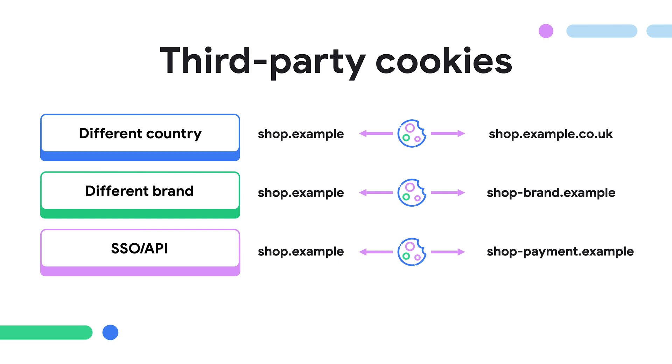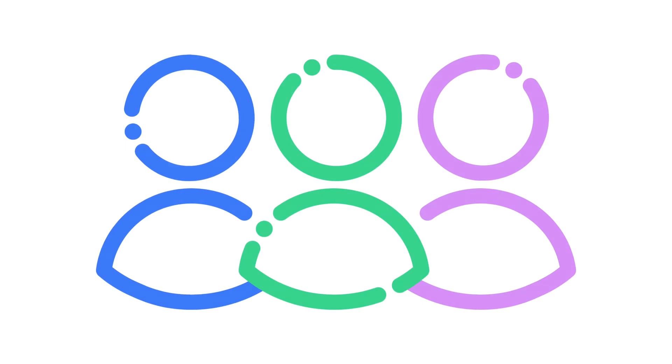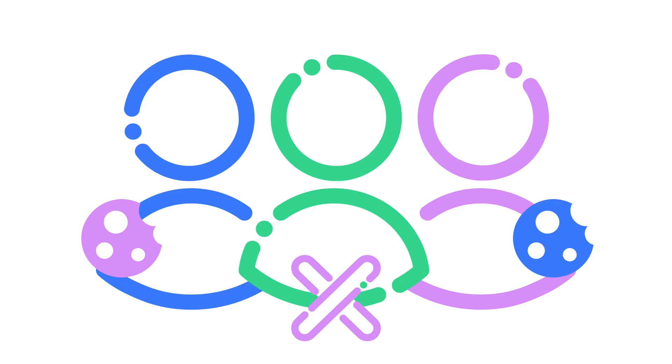Some solutions need to share information across websites, but third-party cookies can be used to track user activity and can lead to privacy and security vulnerabilities. Because of these risks, third-party cookies may be blocked by users, enterprise policies, or browser design. Web developers need to make sure they support all the users, even those who don't have access to third-party cookies. Let's take a look at how to ensure your payment solution works as expected for all your users.